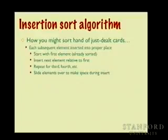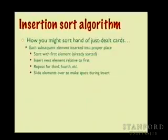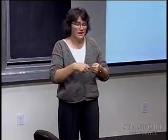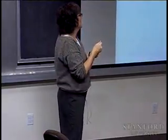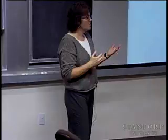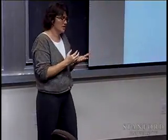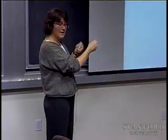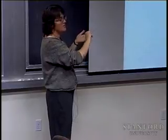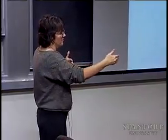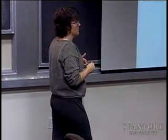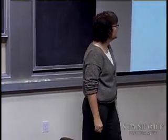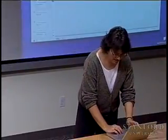Think about how you might sort a hand of cards. You pick up the first card — it's trivially sorted. You pick up the next and decide where it goes relative to the first. Maybe it's greater, so it goes on one side. You pick up the next and it goes in between them. You're inserting each new element into its position among the ones already sorted. Applying this to a vector: assume the first element is sorted, look at the second and decide where it goes relative to those to its left, move it into position by shuffling over to open up space, then extend that as you go further down the vector.